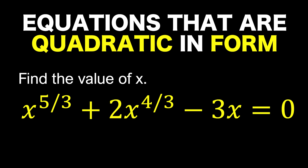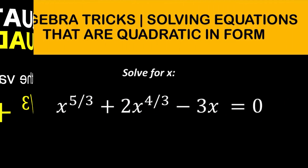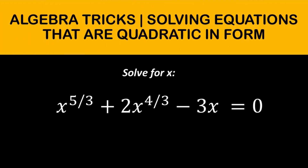Hi everyone, this is Lan the Assistant for our math problem of the day. This time, let's do some algebra tricks when solving equations involving fractional exponents that are quadratic in form. Here is our problem: x raised to 5 over 3 plus 2x raised to 4 over 3 minus 3x is equal to 0. Find the value of x.